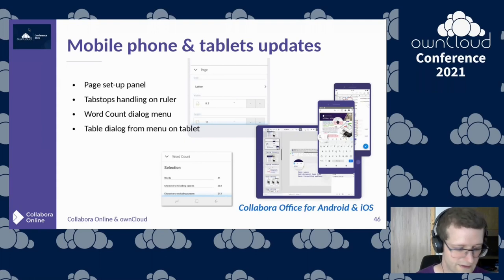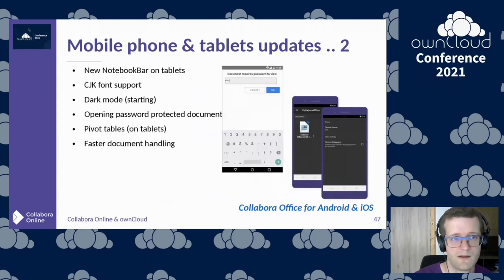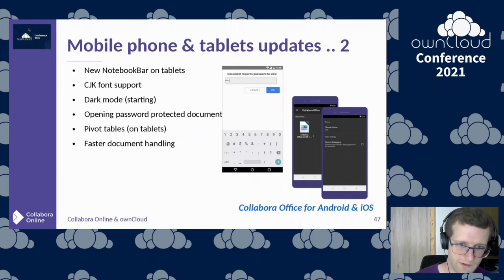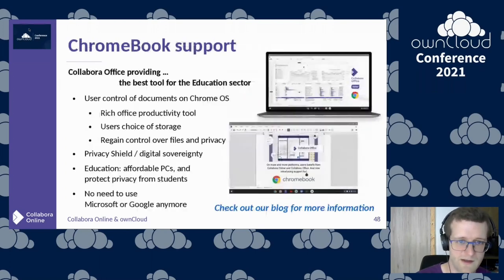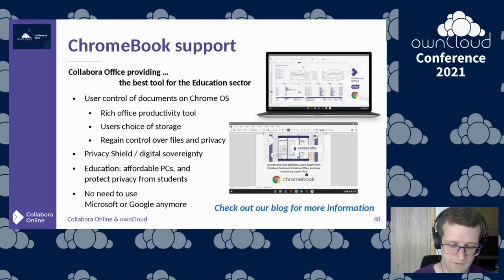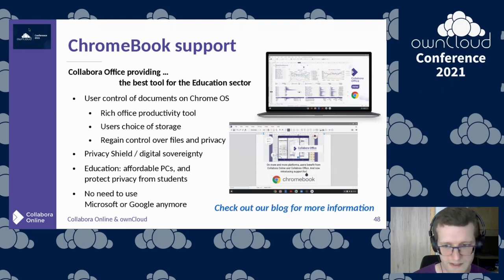You can see the word count in a dialog, useful if you're writing an abstract with word count requirements. We also added initial dark mode support on Android, which users expect when the system has dark mode enabled. We also exposed a pivotable user interface on tablets, and in general we have lots of performance improvements that primarily benefit mobile devices. Chromebook gets the laptop user interface even if technically it runs as an Android app, and we have special tweaks for Chromebook whether you install Collabora Office from the Play Store or open it from the browser.